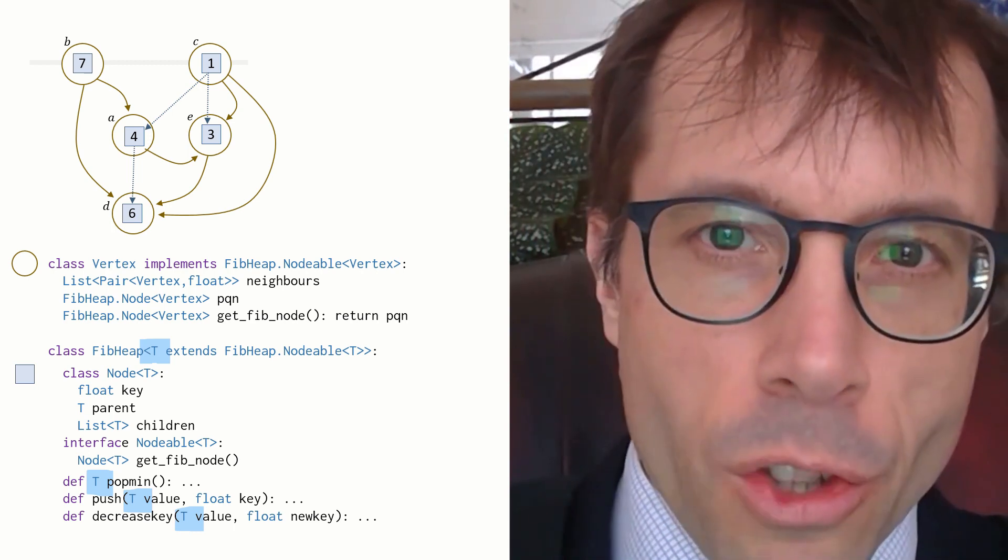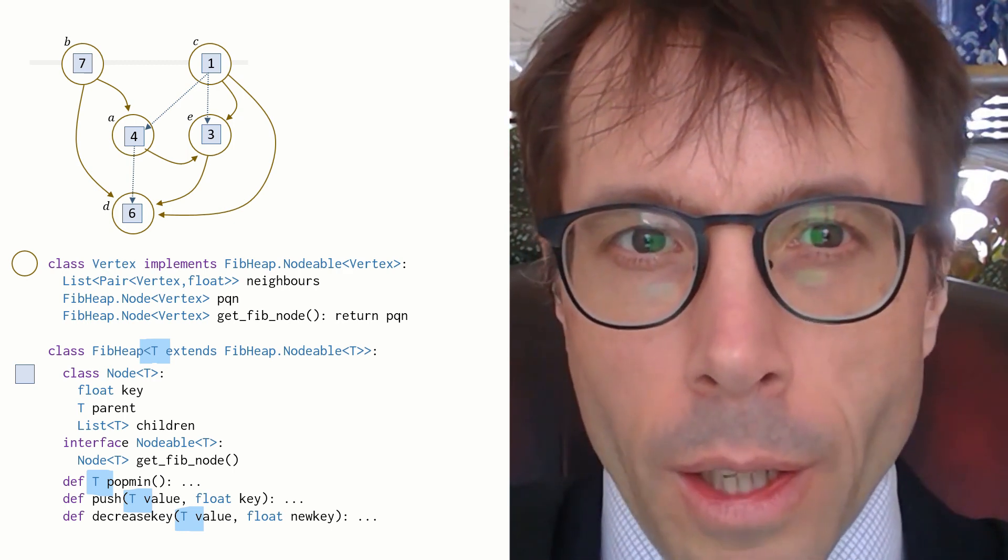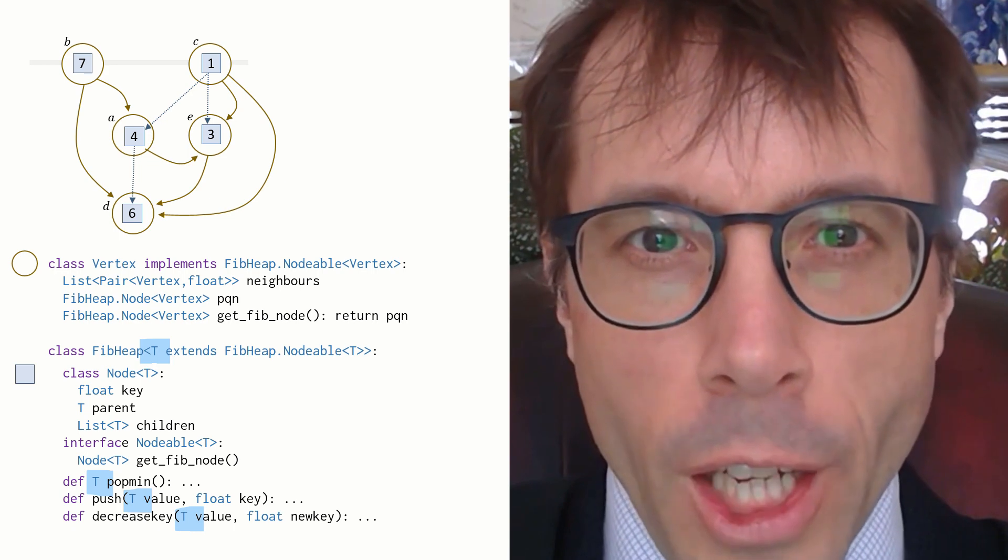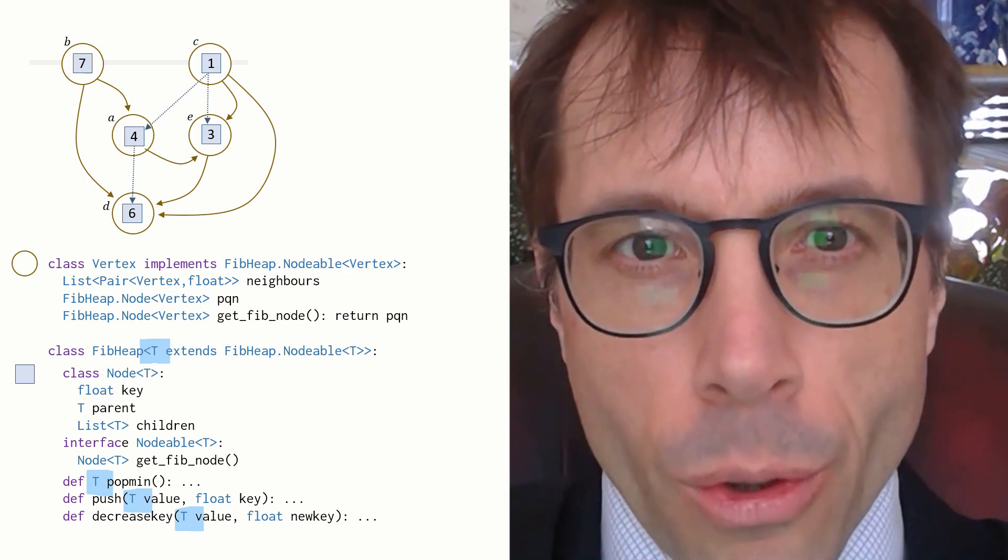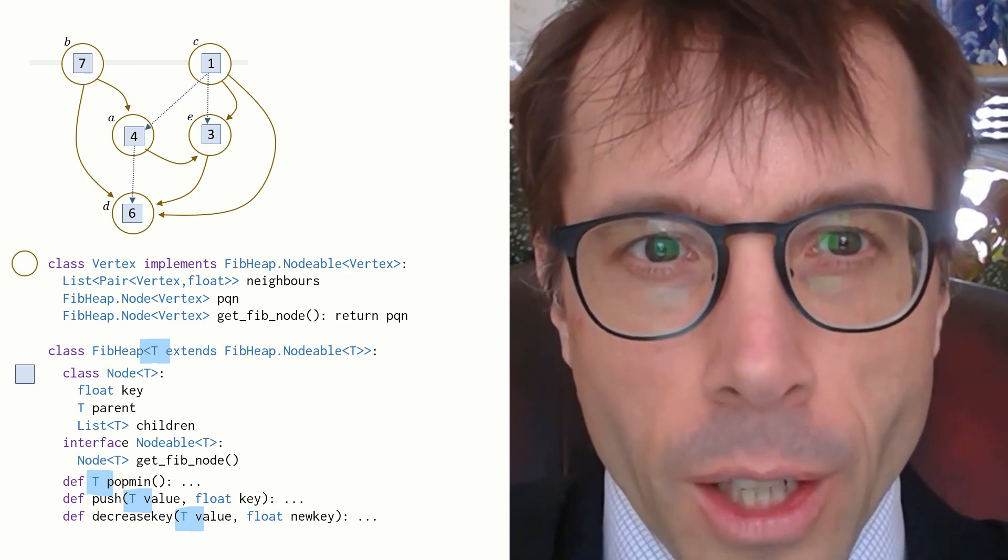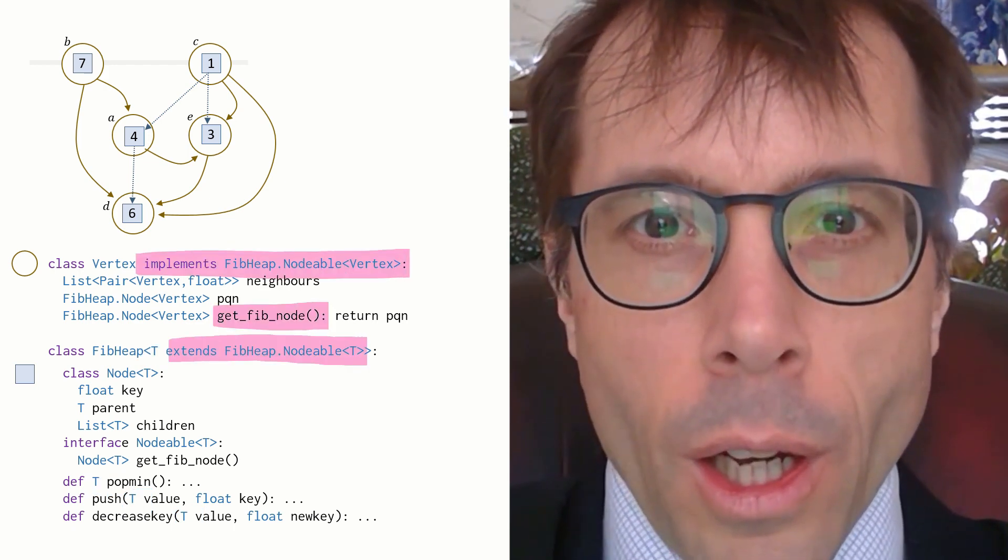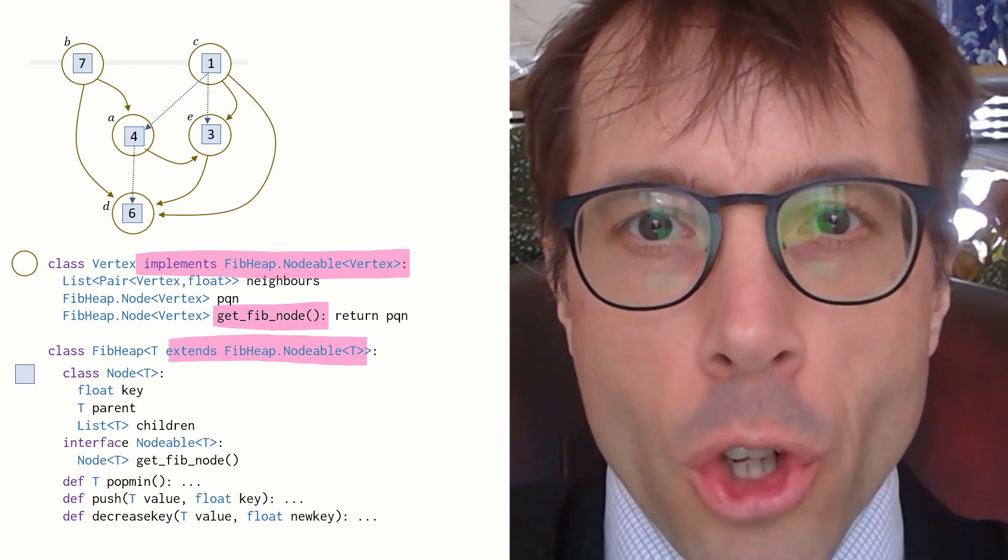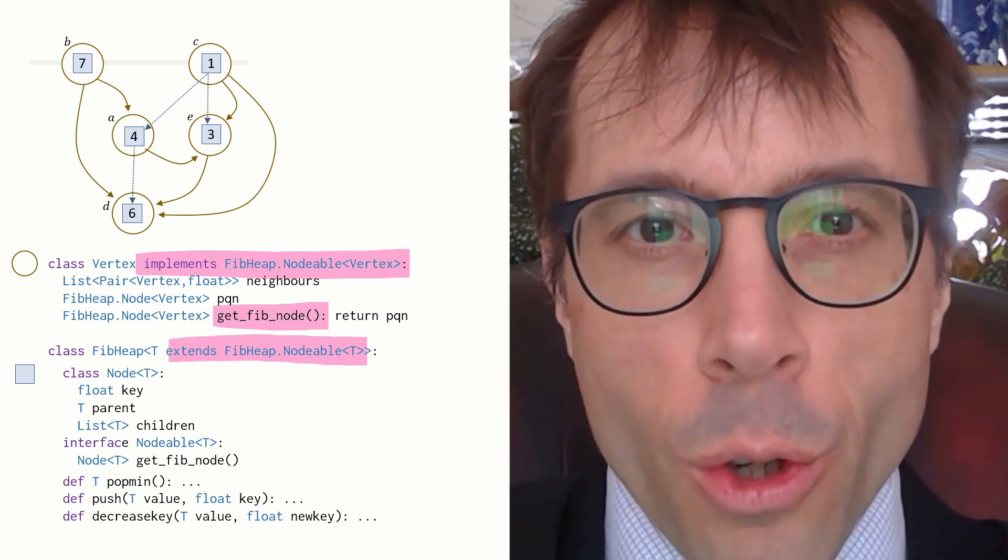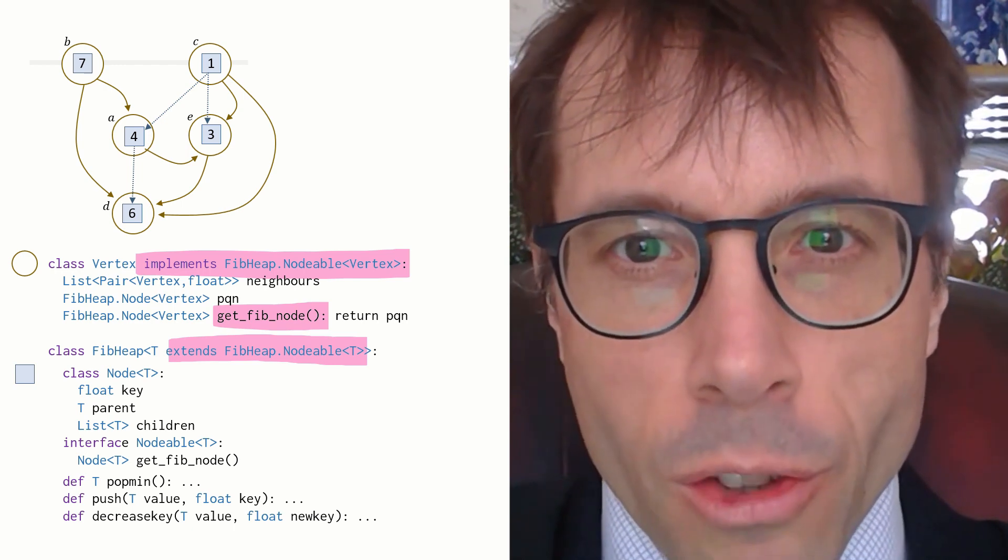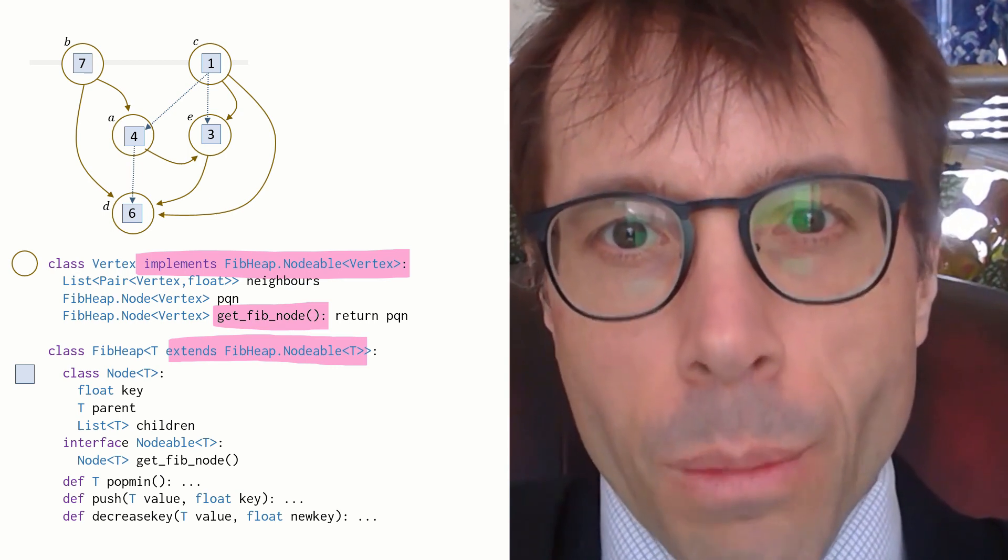When you call pop min, you get back a T. When you push a value, you push something of type T, and so on. Now for the clever bit. The Fibonacci heap needs each T object to have some storage in it for storing the parent pointer and the children pointers. And it does it by saying, each T object must provide the storage that I need, and I shall get it by calling getFibNode. So all that a vertex has to do is provide a getFibNode method, and then it can be used as the generic T for the Fibonacci heap. And this way, the heap doesn't need to know anything at all about T, other than that it provides getFibNode.